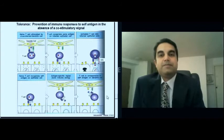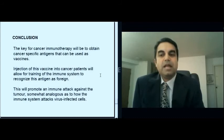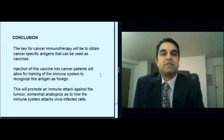So ironically, it's the same mechanism of tolerance that allows many cancer cells to proliferate unchecked. So the key for cancer immunotherapy will be to obtain cancer-specific antigens that can be used as vaccines. Injection of this vaccine into cancer patients will allow for training of the immune system to recognize this antigen as foreign. And this will promote an immune attack against the tumor, somewhat analogous to how the immune system attacks virus-infected cells.